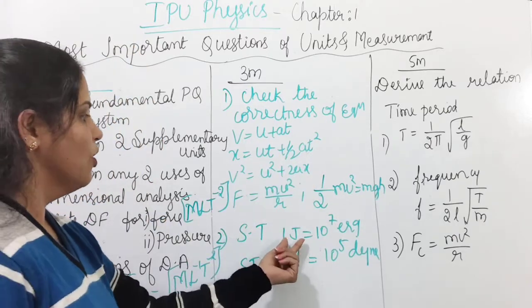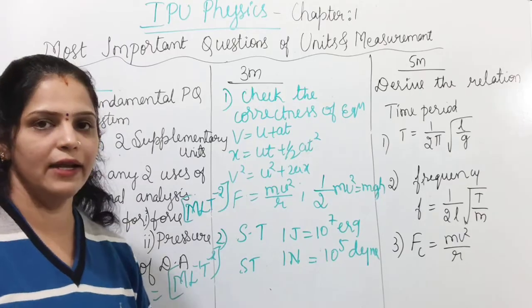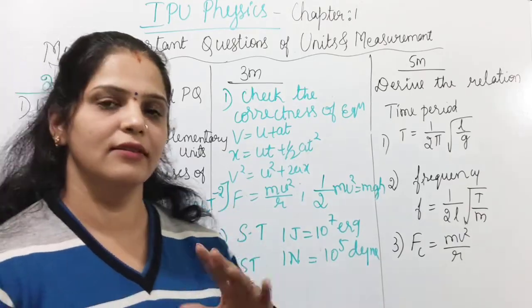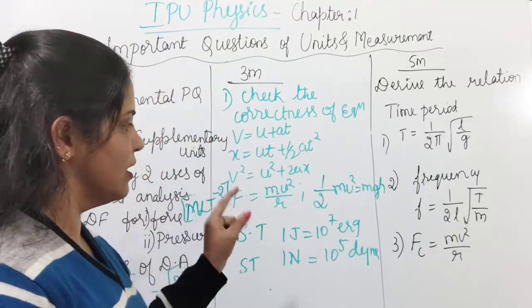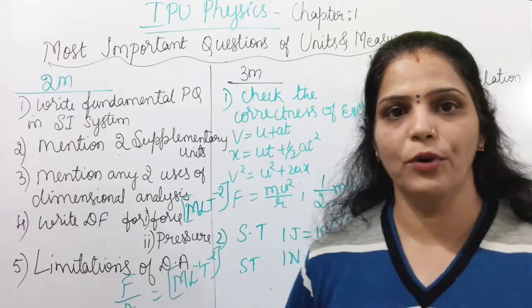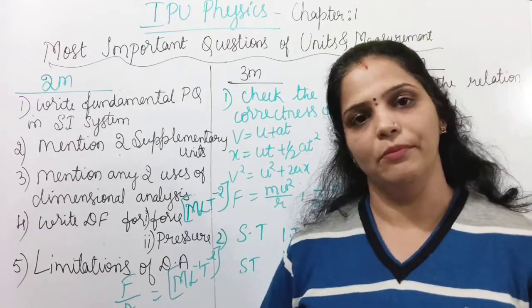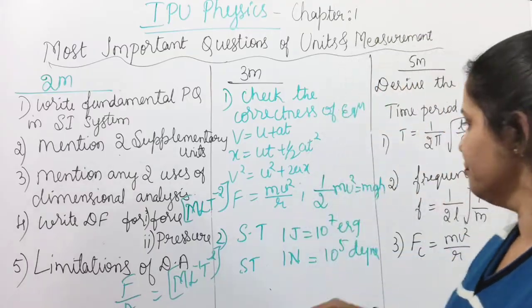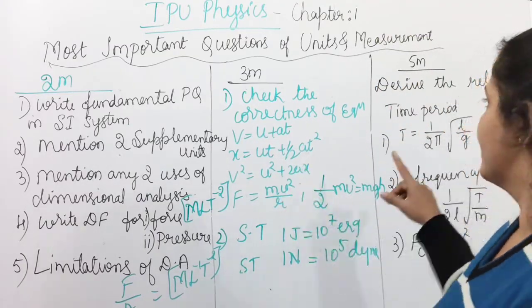And show that one joule is 10 to the power 7 erg or one newton is 10 to the power 5 dyne, you may expect for three marks. Please go through these. And I have solved all these. And I uploaded the video related to this. And I'll send you the link of this video. In description box, link will be given. Please go through that.